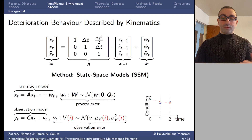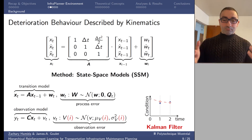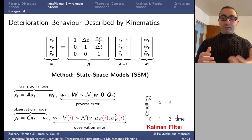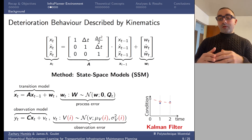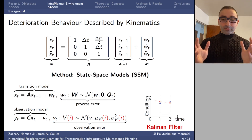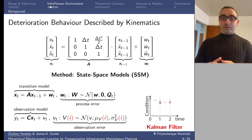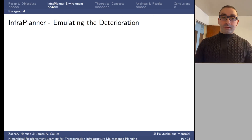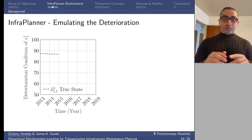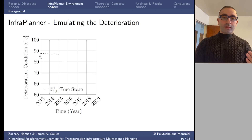Using the observation model, I can update my state estimate to incorporate information from the observation, then use the transition model to predict the next state. If another inspection occurs, I update again. All these operations are performed using the equations of the Kalman filter as the basis framework. There are additional factors taken into account when modeling deterioration, but these are the basic principles describing the deterioration behavior.